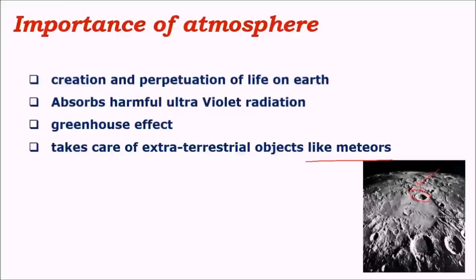Sometimes, when meteors are bigger and denser, certain parts may remain unburnt and hit the earth's surface, giving rise to craters. Such craters are present on the moon — as the moon has no atmosphere, its surface is filled with impact craters. If earth had no atmosphere, earth's surface would similarly be covered with impact craters, leading to mass extinctions and a complete wipe-out of life. Because we have an atmosphere, such impacts are very few, saving the earth's surface from material impact.